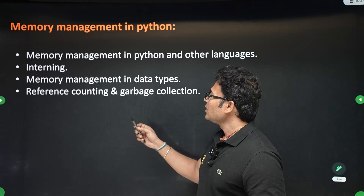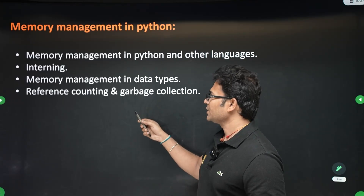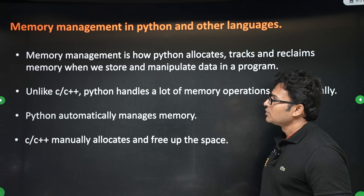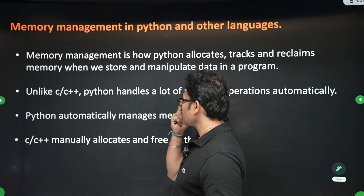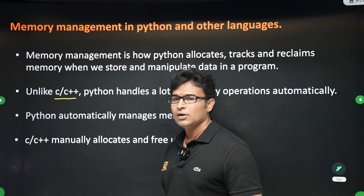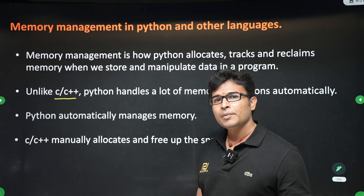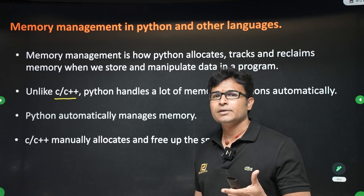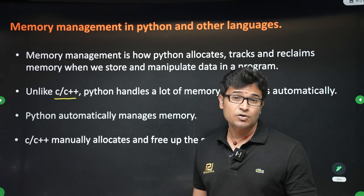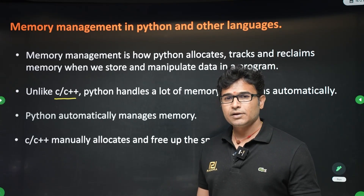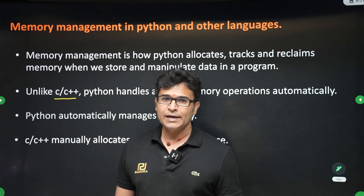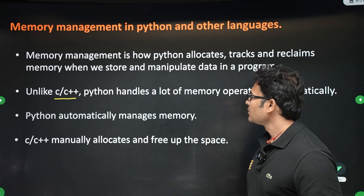In this video you will go step by step through memory management, interning, data types, and reference counting in garbage collection. Memory management in Python differs from C and C++, where you allocate and free memory manually using malloc and free. In Python, memory management is done automatically — you don't have to handle it manually.